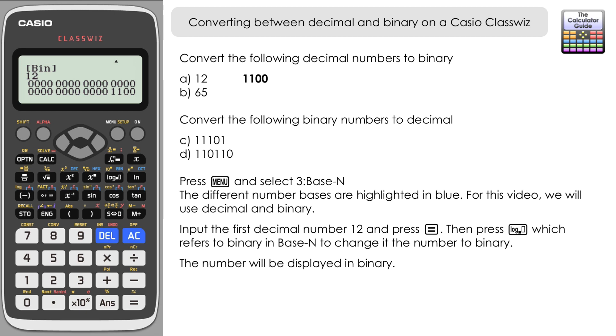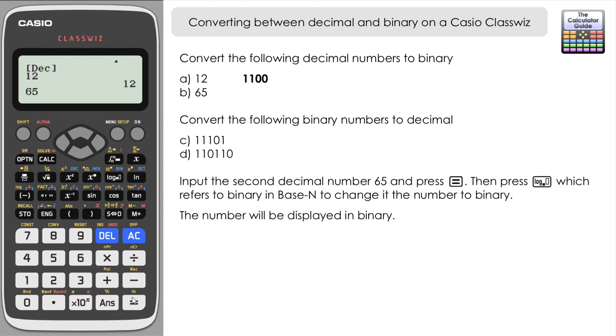So we can express that as 1100 in binary. Now, because our next input is going to be a decimal number, 65, we need to press decimal again and input 65. Press equals to make that the solution, and once again press binary. It shows more bits than we need, but if we focus on what we need, we get 7 bits: 1000001 in binary.